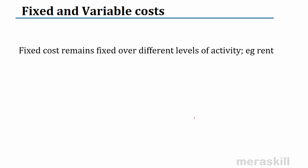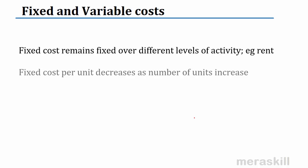Before the example, let's clarify fixed and variable costs. Fixed costs remain fixed over different levels of activity. For example, rent for the factory remains the same whether I make no units, 10 units, or 10,000 units. Fixed cost per unit decreases as the number of units increase — the more units I make, the greater the number of units the cost is spread against, and the per-unit cost comes down.